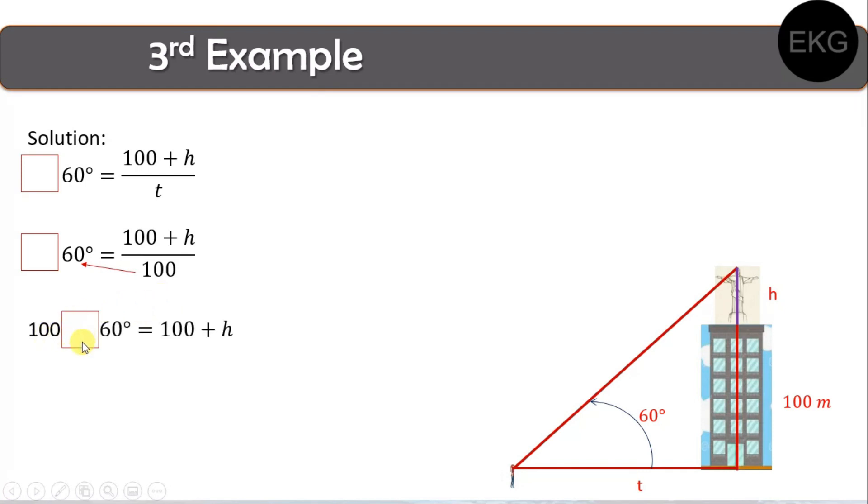So, 100 times yung trigonometric function of 60 degrees, ano yung pinaka-applicable dito? S equal to 100 plus h. Then, ilipat natin sa kabila, magiging negative.